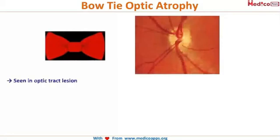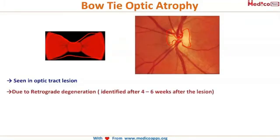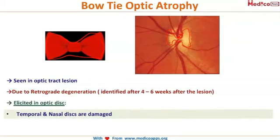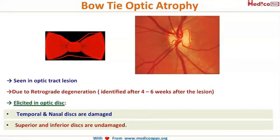Another interesting finding in optic tract lesion is bowtie atrophy. The pallor of the optic disc takes the shape of a bowtie — you can draw a bowtie shape on the pale region. This occurs due to retrograde degeneration, identified four to six weeks after the lesion. The pathology is that temporal and nasal disc fibers are damaged while the superior and inferior parts are undamaged, causing atrophy in the form of a bowtie.